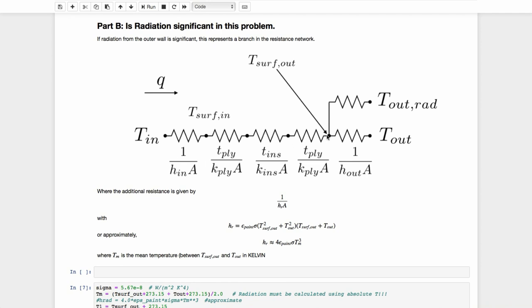And so what we're going to do is say, well, we have a parallel resistance with this radiation process between T_in out to the outer surface of the plywood. Our resistance network is the same, but now we have the possibility of transferring heat by convection to the outside temperature. And we also, through a parallel pathway, have the possibility of losing heat transfer by radiation to the outer surface.